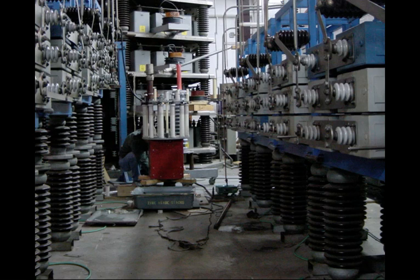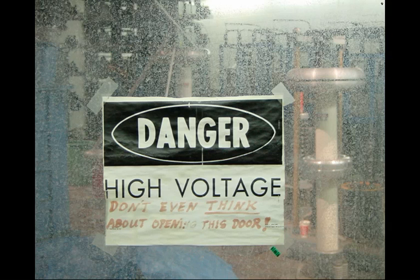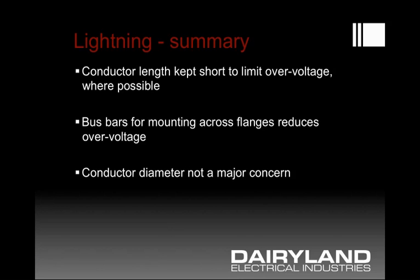This kind of apparatus can produce quite high levels of lightning current — so much so that you have warning signs on the doors. The key factor in lightning protection is to limit conductor length as short as possible to limit the resulting overvoltage.